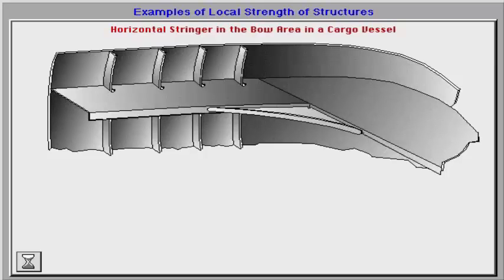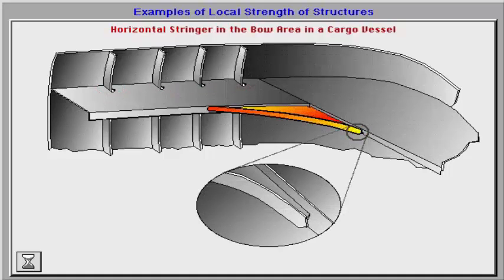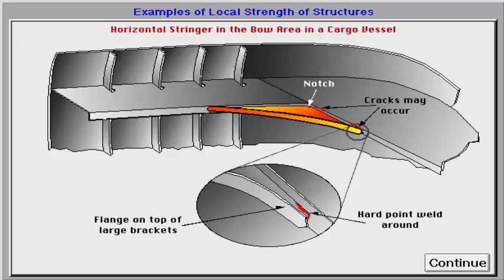A horizontal stringer at the forward side of a cargo vessel is another example of a highly stressed area. Frames are supported by the horizontal stringers and transfer some of the forces acting on them. The most stressed areas of the stringers are at the intersection between frames and stringer web, and in the connections at the stringer ends.